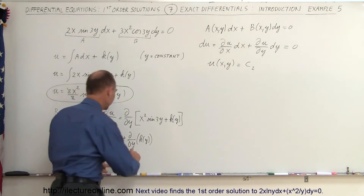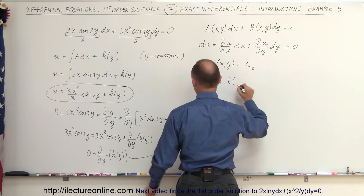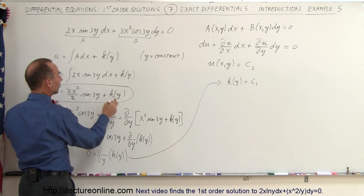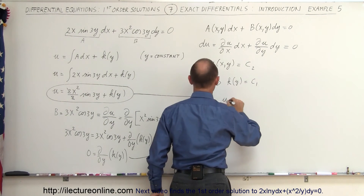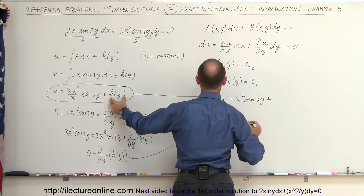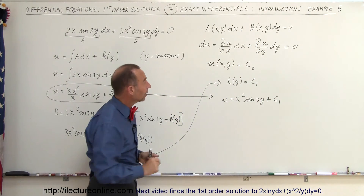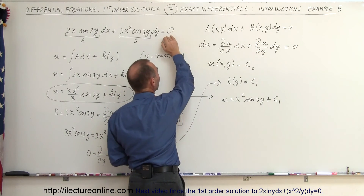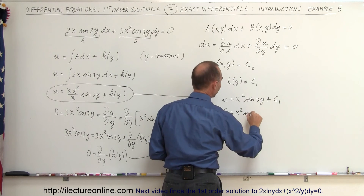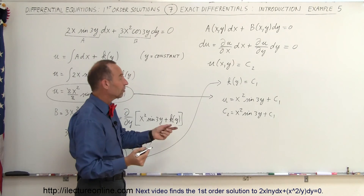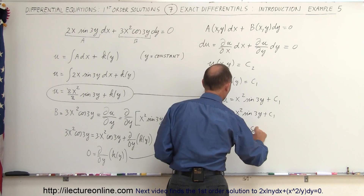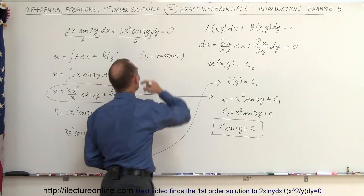If the derivative of k(y) with respect to y equals zero, then k(y) must equal a constant, which we call C₁. Going back to the general solution, u equals x squared times the sine of 3y plus C₁. Since u itself equals a constant, we replace u with a constant C₂, giving C₂ equals x squared times the sine of 3y plus C₁. Combining the constants, x squared times the sine of 3y equals a constant — the general solution.